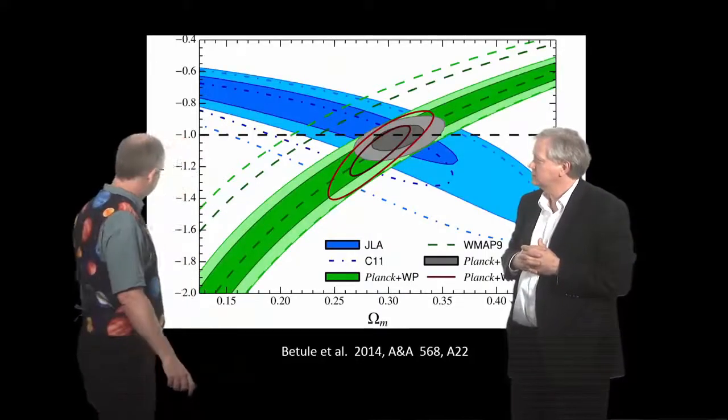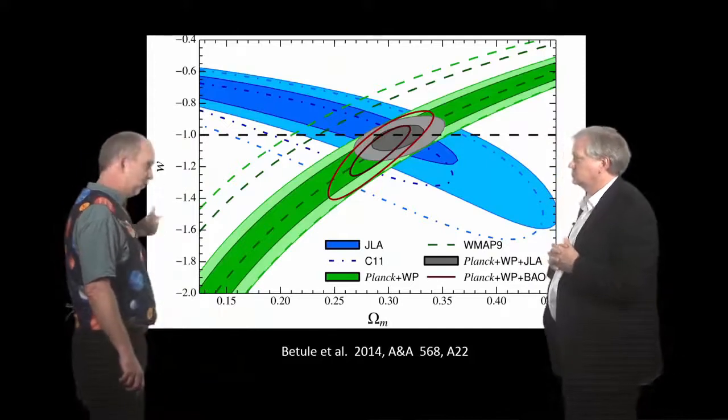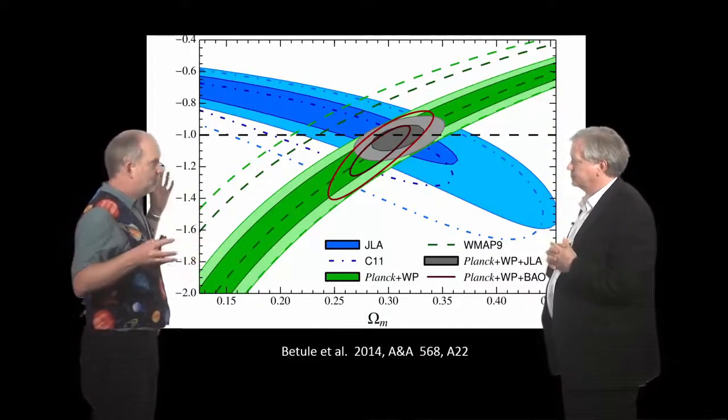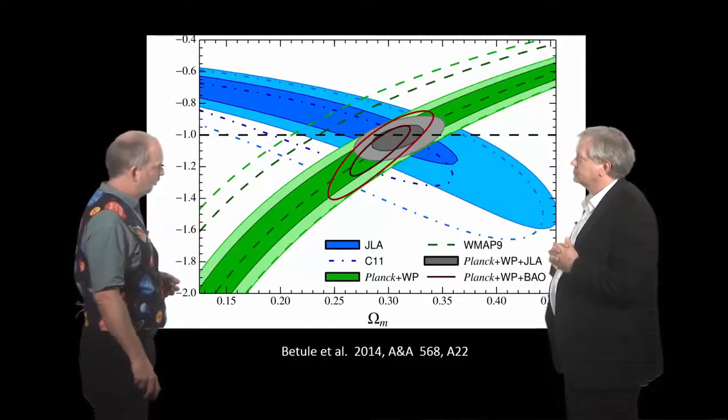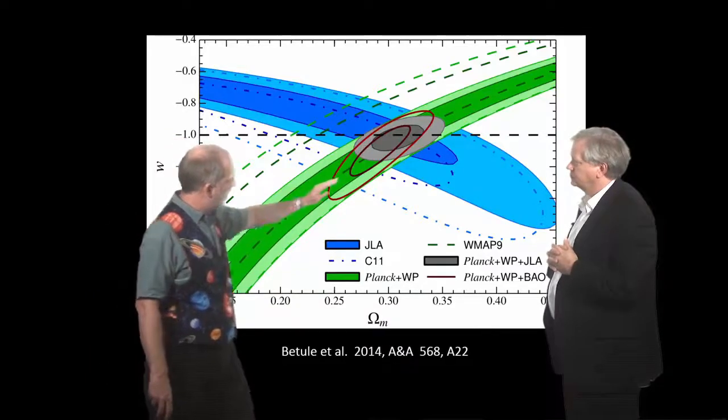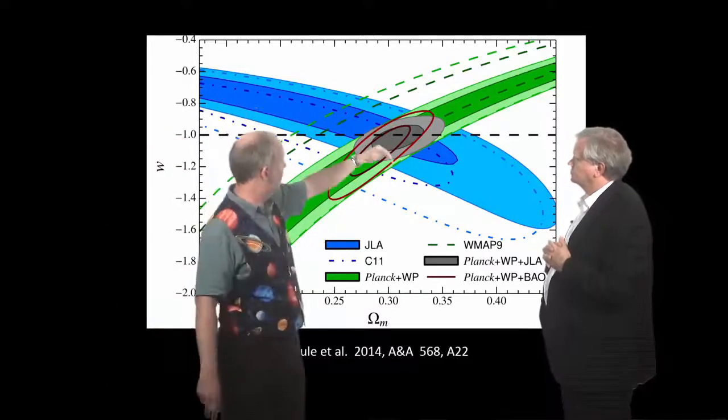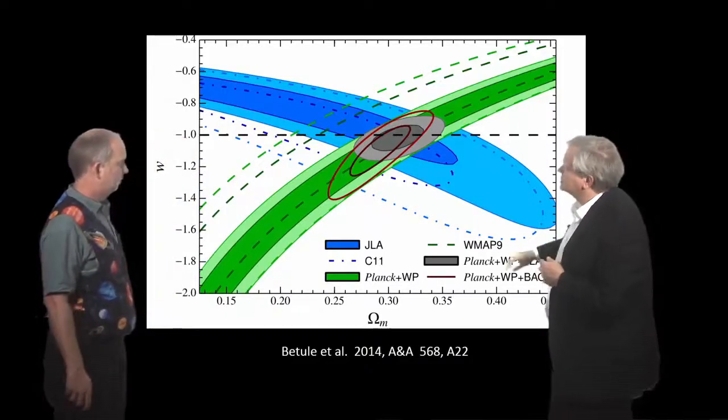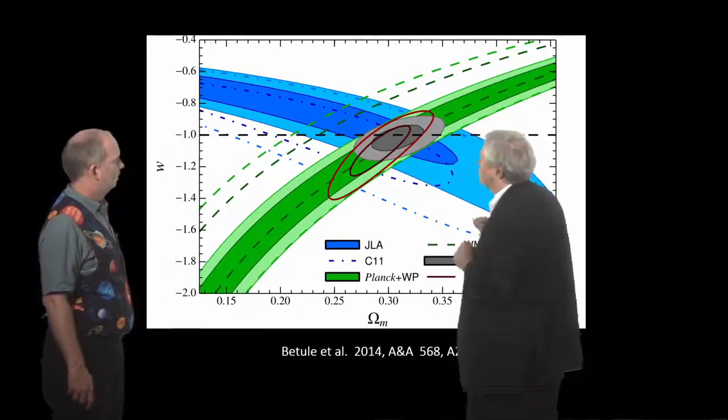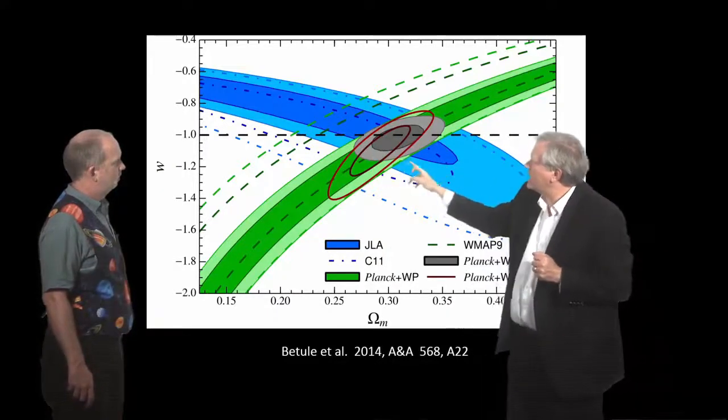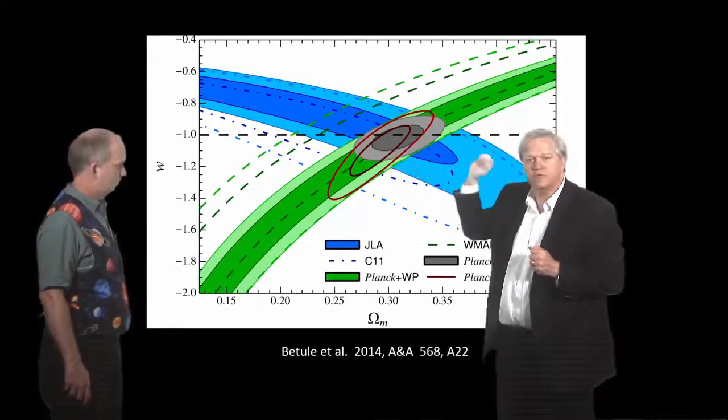Here's another example of one of these plots now. We're plotting W, which, remember, is the equation of state parameter. It's telling you whether the dark energy becomes bigger or lower density as the universe expands, against omega matter. And here you've got the microwave background measurements. Here you've got the supernova measurements. And they cross again. And again, we also have that baryon acoustic oscillation measurements, which cross through here as well. So once again, when we add it all together, you get this nice little gray area where we put all the information together.